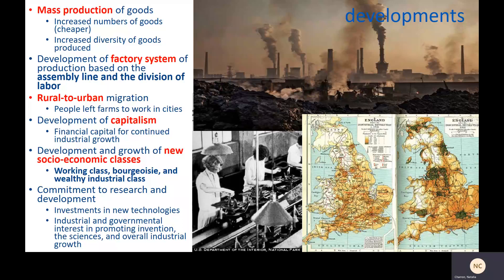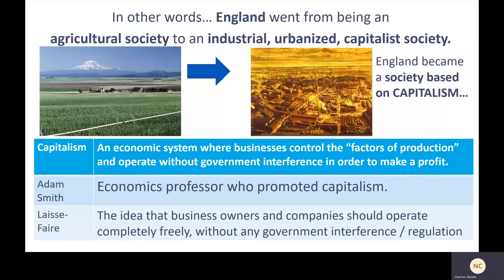It wasn't just about producing goods, because once you can mass produce things in factories you could mass produce all kinds of things — including medicine, but also weapons. In other words, England went from being an agricultural society to an industrial, urbanized, capitalist society.